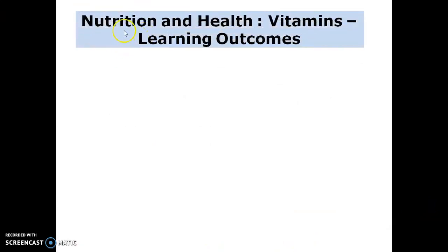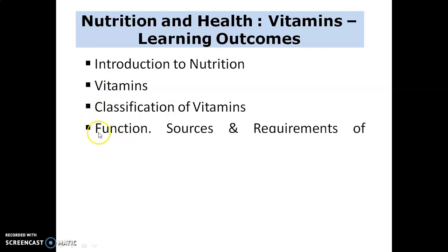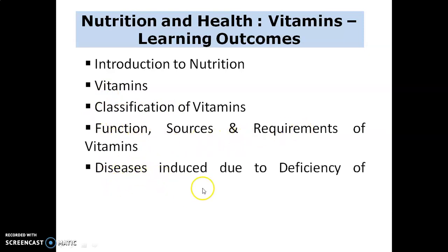In summary, from this topic on Nutrition and Health — Vitamins — the learning outcomes are: introduction to nutrition and vitamins, classification of vitamins, functions, sources and requirements of vitamins, and diseases induced due to deficiency of vitamins. Thank you.